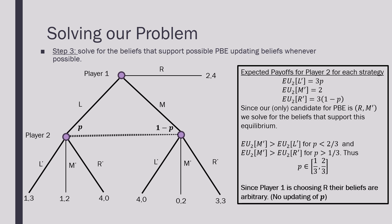So the only candidate Perfect Bayesian Equilibrium is going to be where Player 1 is playing right and Player 2 is playing middle. We're going to solve for the belief that supports this equilibrium. We're going to note that the expected payoff of Player 2 playing M when comparing that to playing left is going to be dominant when p is less than 2 over 3.